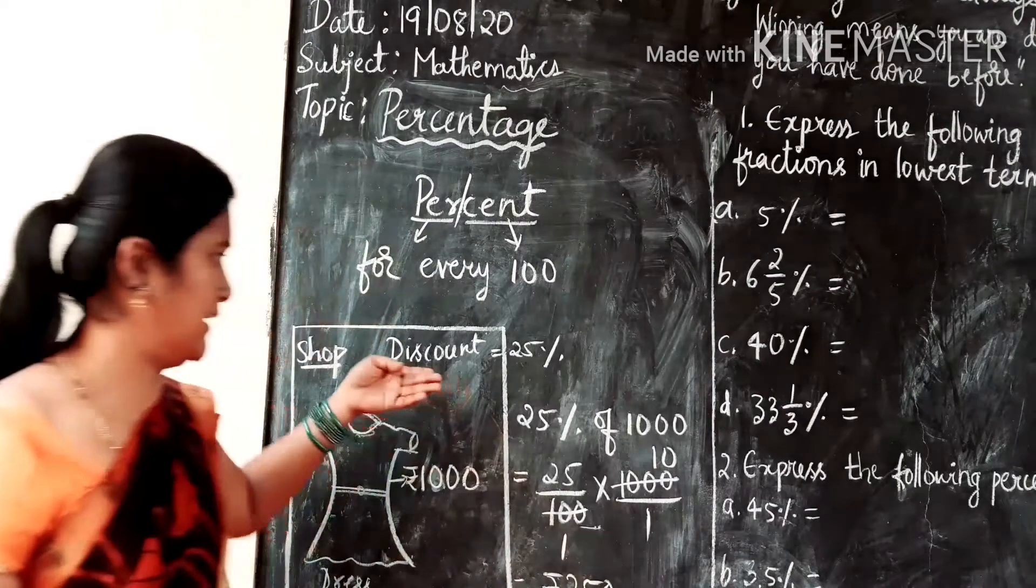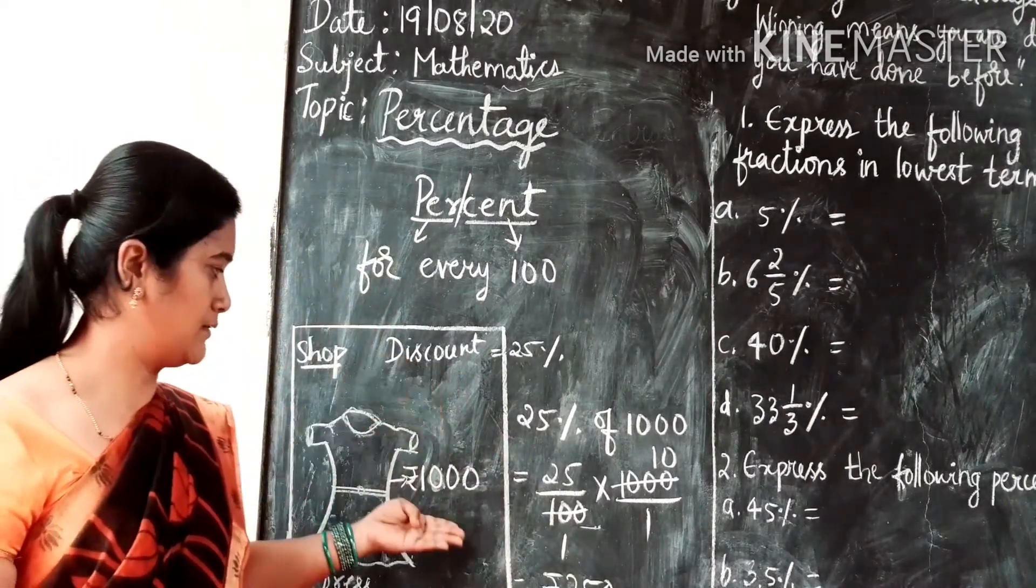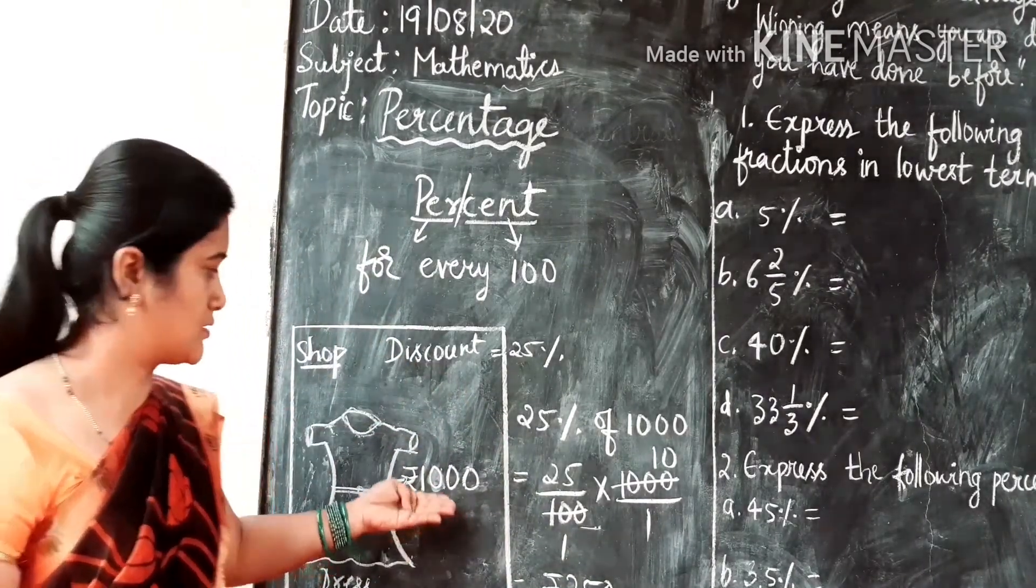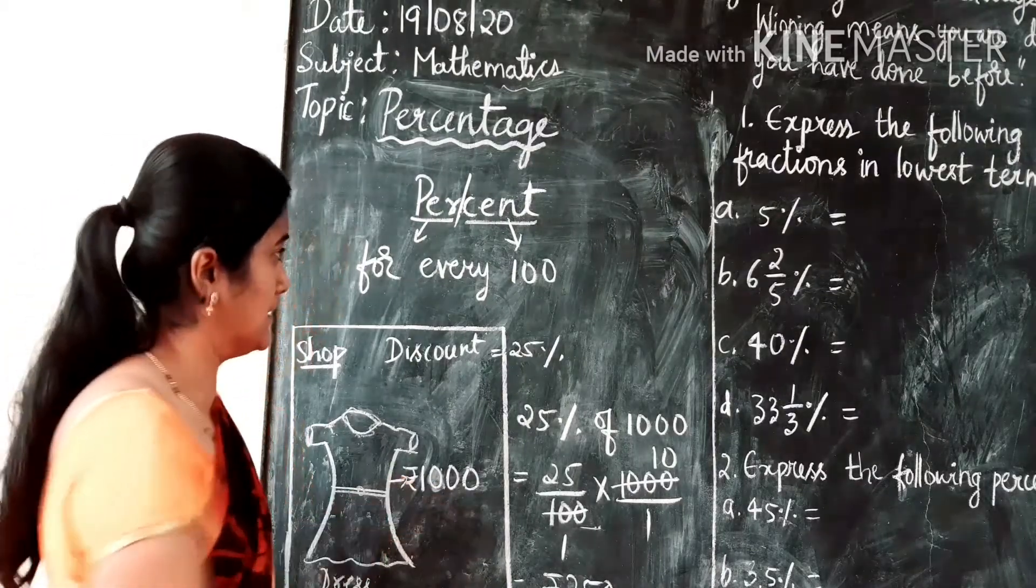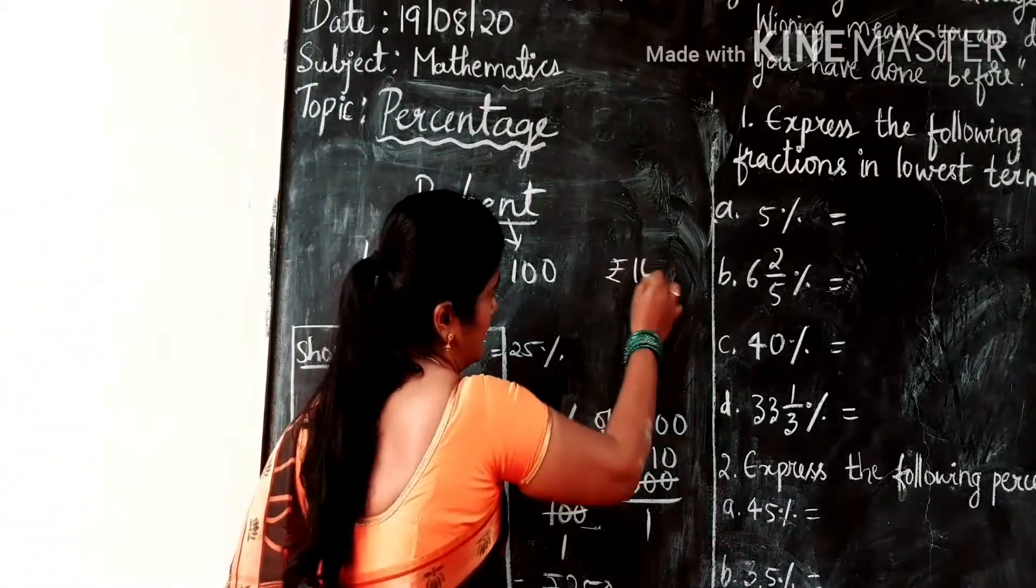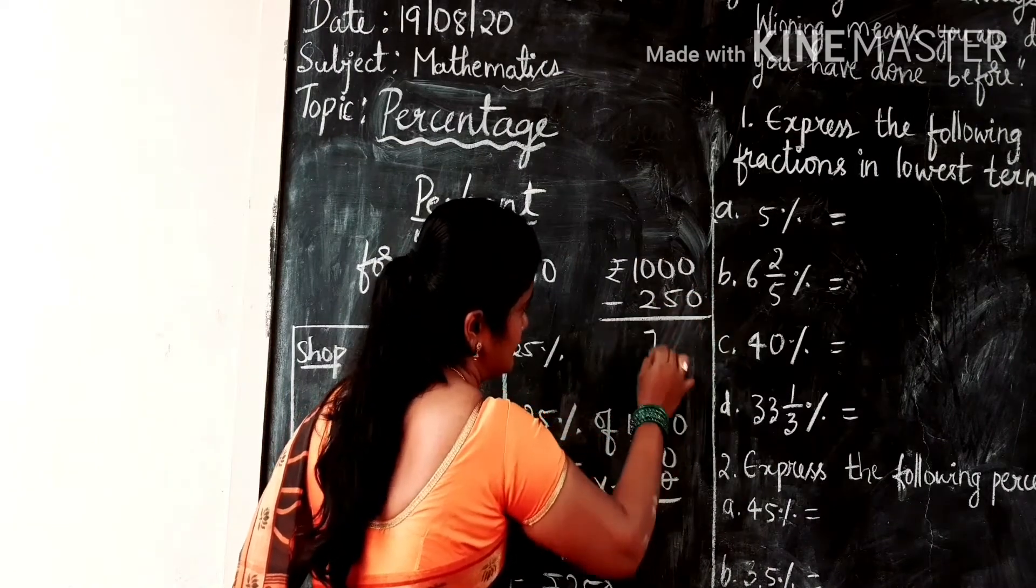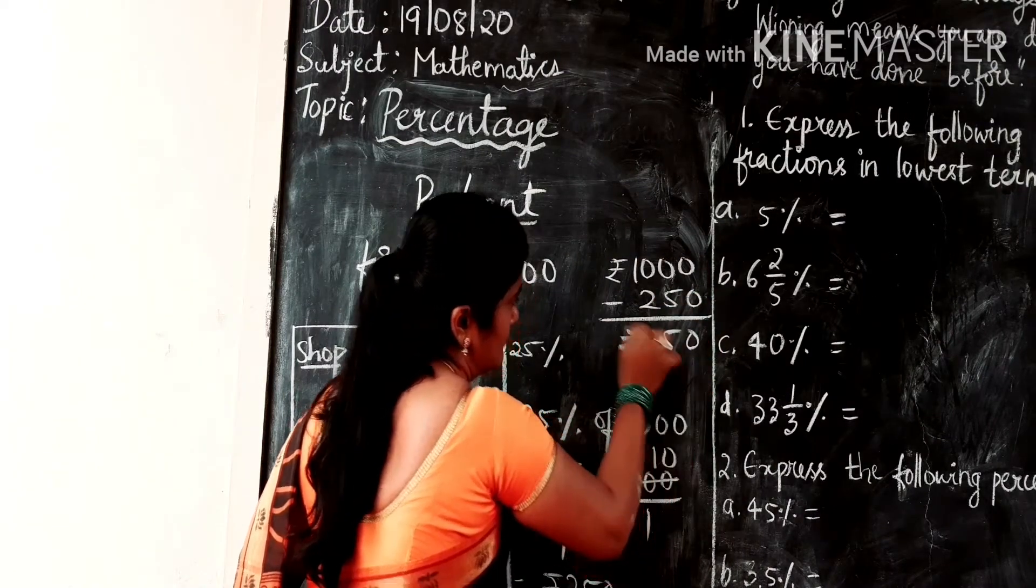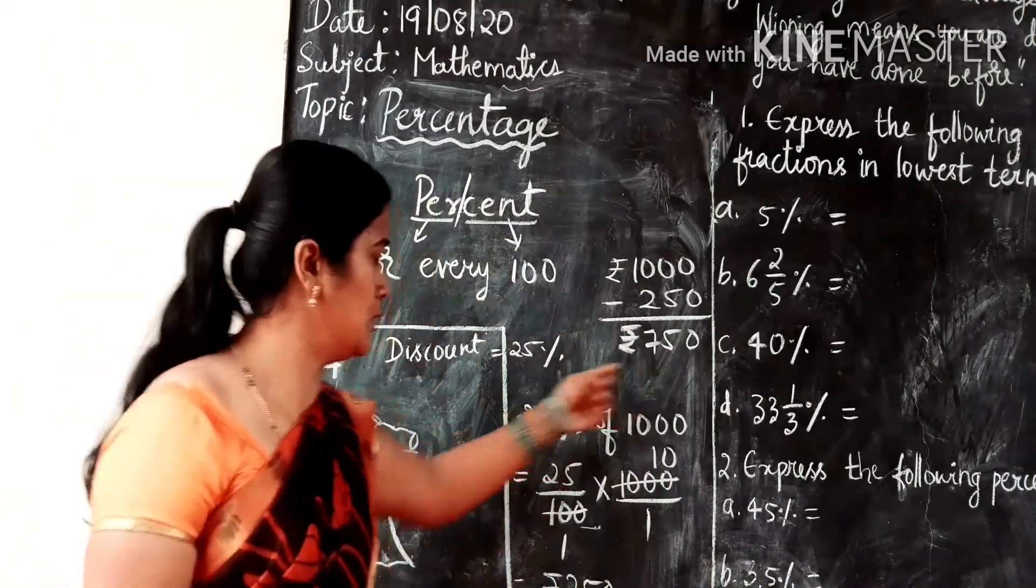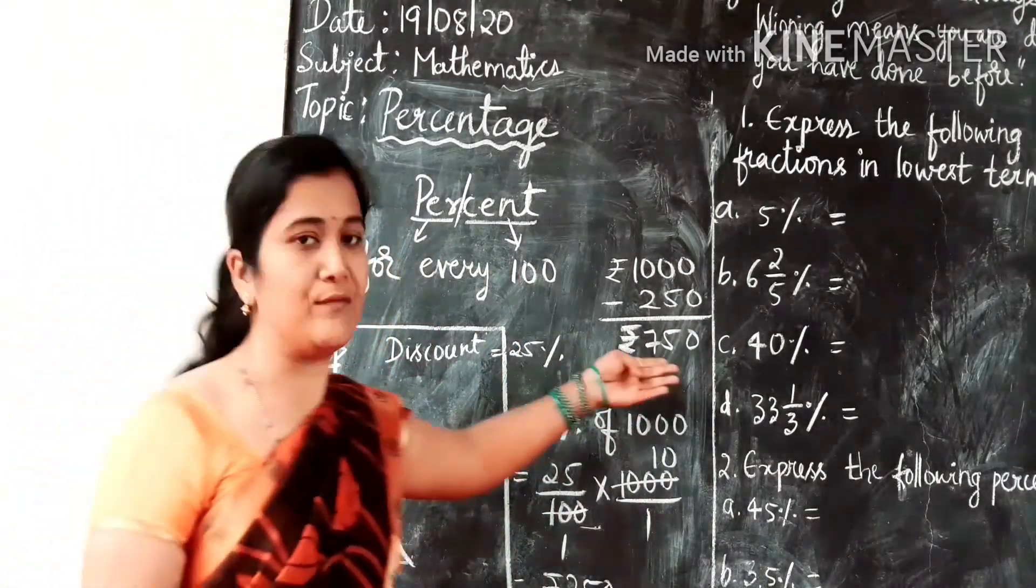250 is the discount given on the dress of 1000 rupees. So the shopkeeper will lessen the amount of 1000 rupees by 250 rupees. That is, he is going to sell this dress for 750 rupees.